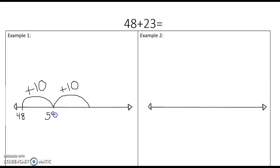So 48 plus 10 is 58, and then we add 10 more. So five goes up by one, it becomes six, and then the ones place stays the same. So we've added our two tens.